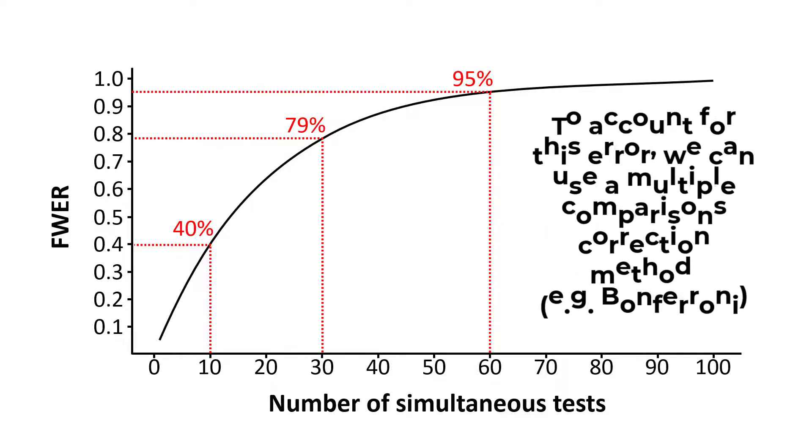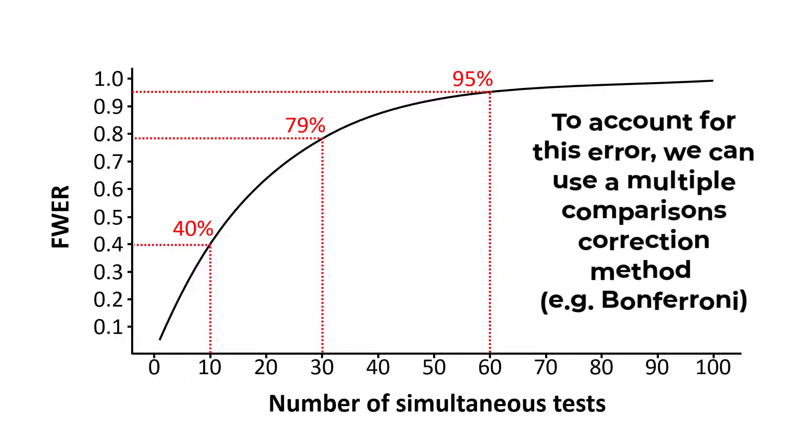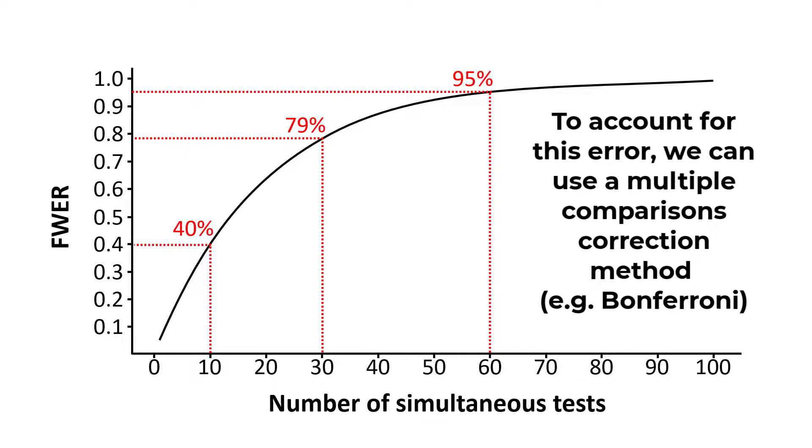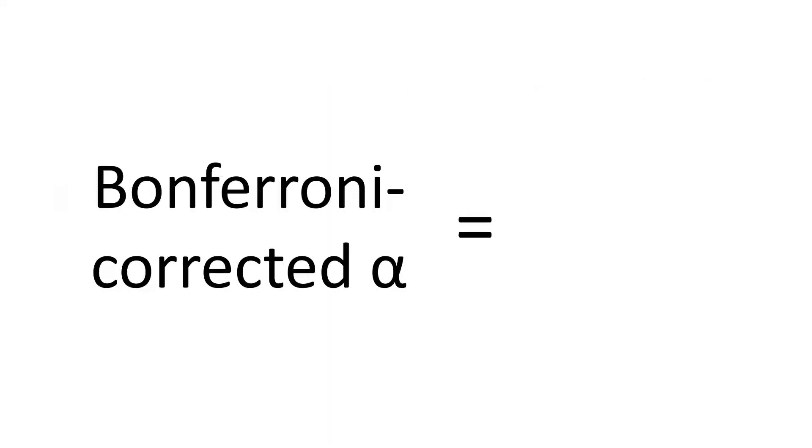So one way to control for this is to use a multiple comparisons correction method. And the Bonferroni correction is just one such example. The correction is actually really easy to understand, which is the reason why it is commonly used.